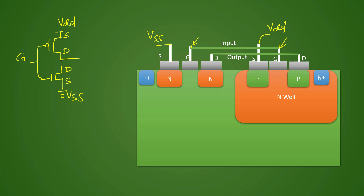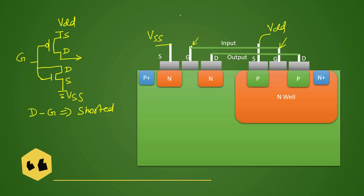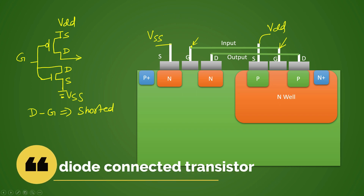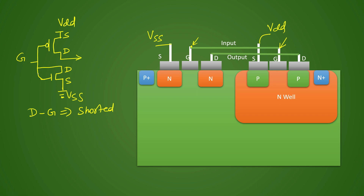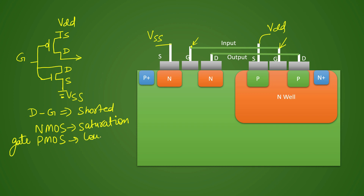For a tie high cell, we tap the output from the drain terminal and create a short of drain and gate. Because of this drain-gate short, it is now acting as a PN junction — this connection is popularly known as a diode-connected transistor, because it is actually acting as a diode. The NMOS will always be in saturation region. Because it is in saturation, the gate of PMOS will always be low, and since it is low you will get a high output, as it is now a standalone PMOS inverter.